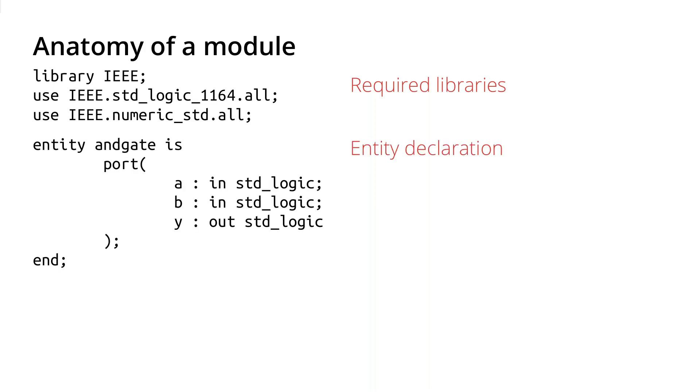Next we have the entity declaration. Sort of like in C or many other languages, you can declare a function and then define that function separately. The entity is sort of like the function declaration. We're describing the inputs and outputs to this particular module or entity.